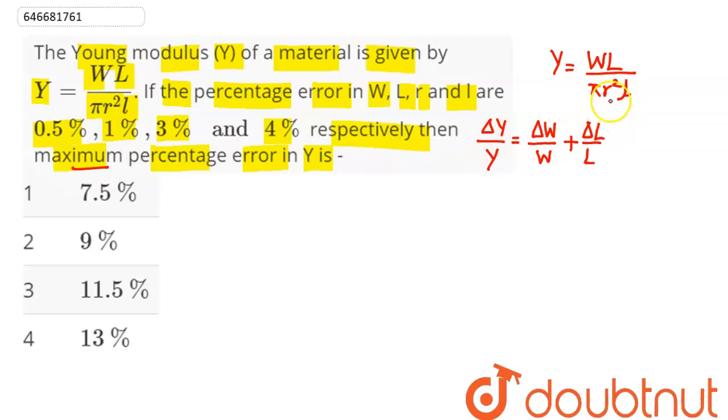For r squared, we get 2 × Δr/r, and for l, we get Δl/l.